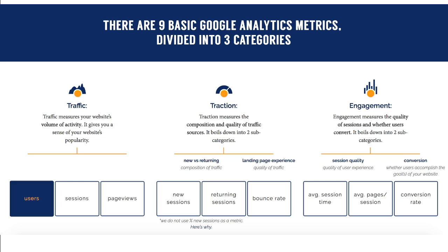The third category is engagement, which includes average session time, average pages per session, and conversion rate. Metrics in this category offer information about how well your users engage with your website and whether they ultimately convert and accomplish your business objective. Engagement can be divided into two subcategories: session quality and conversion. Session quality includes average session time and average pages per session — those two metrics working together are considered one of the most accurate measurements of how engaged users are on your website.